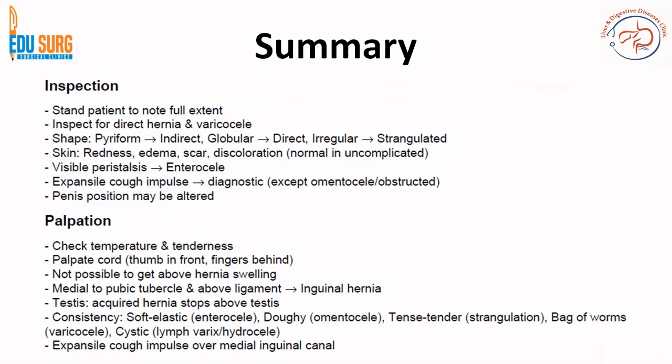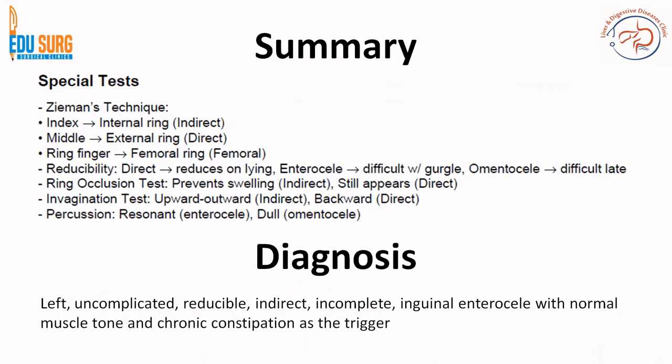For a quick summary of inspection: patient must stand, inspect, then assess shape, skin, visible peristalsis, expansile cough impulse, and penis position. On palpation: the basic steps include the pubic tubercle and expansile cough impulse, followed by the special tests — Zeman's technique, reducibility, ring occlusion test, invagination test, and examination for risk factors.